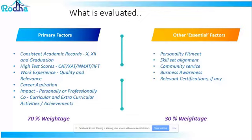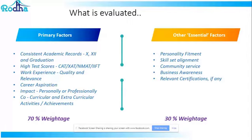The first primary factor is consistent academic records. Academic records from your 10th, 12th, and graduation play a tremendous role in deciding how you have been as a candidate throughout your life — how serious you have been about your studies, how much you have learned and scored. From a yardstick point of view, that's an important point for the admission committee to understand. Consistent academic records are very, very important as the first point of evaluation.